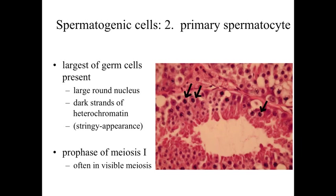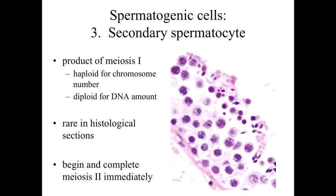Secondary spermatocytes are very difficult to identify in a histological specimen because they are in meiosis II. These are the products of meiosis I — haploid for chromosome number but still diploid for DNA amount, as they are halfway through meiosis. Secondary spermatocytes are very rare in histological section because meiosis II occurs immediately after meiosis I and is completed very quickly, so these cells spend very little time in this state.